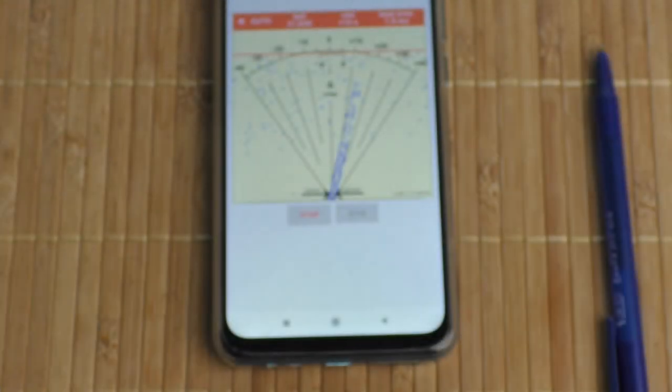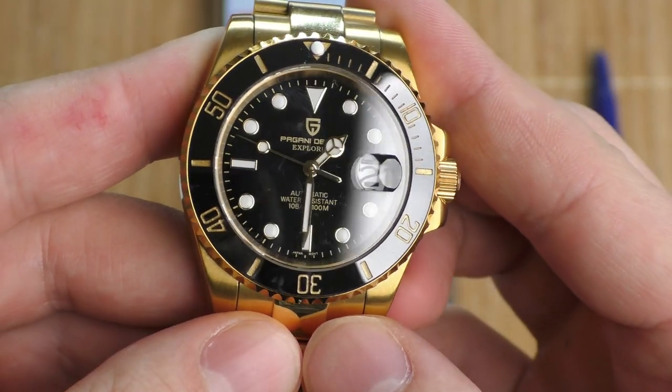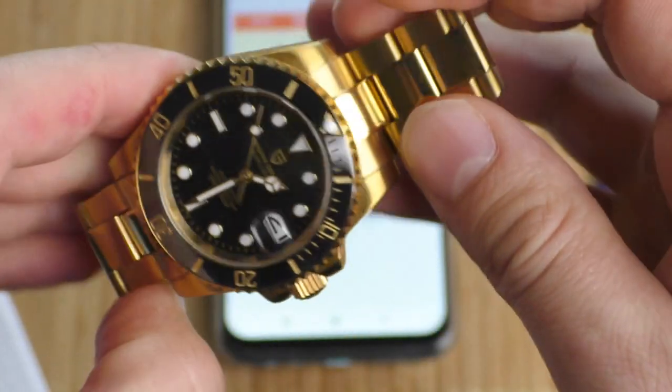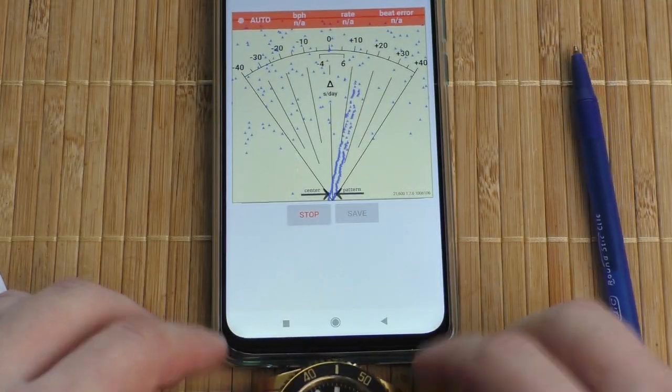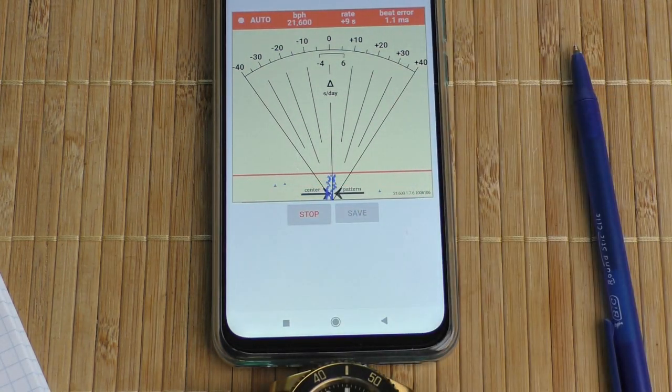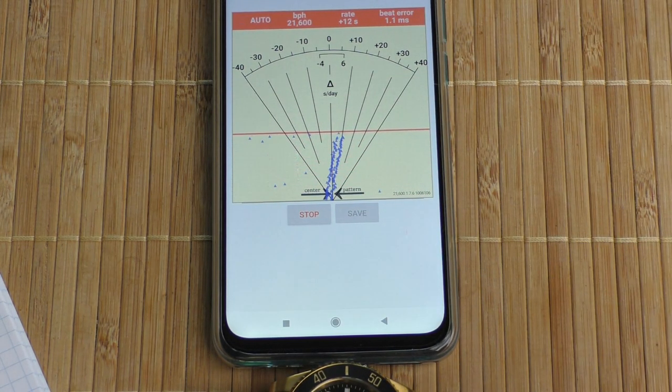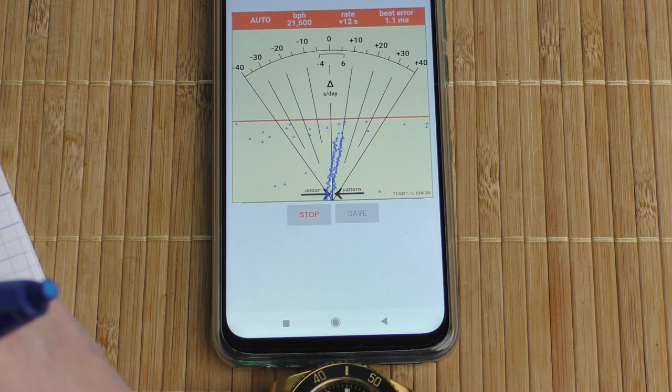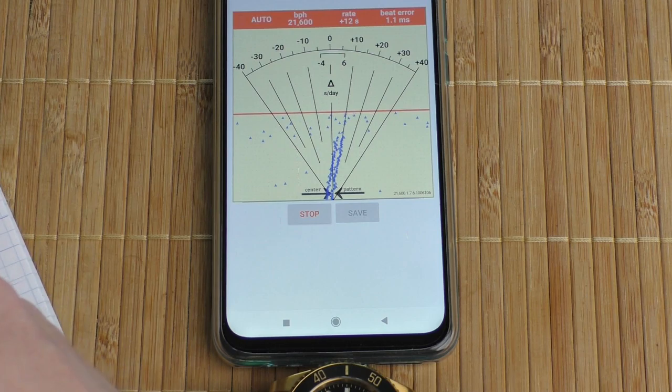It's PD 1661, the golden one, beautiful watch. I like the dial, that dial is very beautiful. Also Seiko NH35. Let's see what it can do. Okay, roughly plus 12 seconds and 1.1 beat error.